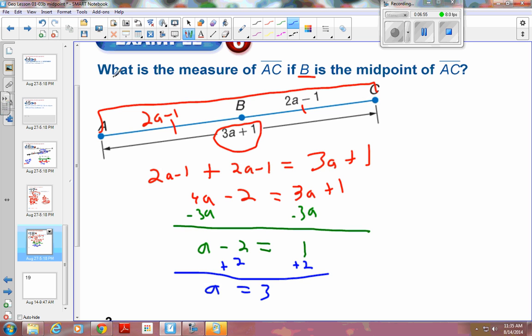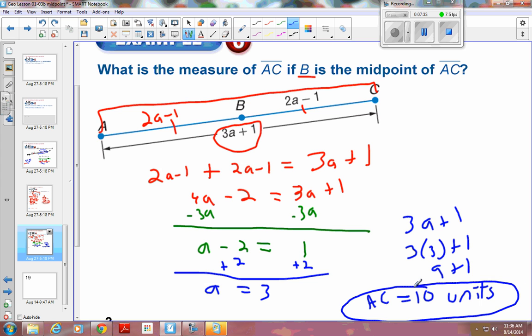Again, not the final answer. What is the measure of AC is what we're looking for. AC is the whole thing. The whole thing is a 3A plus 1, so that's going to be 3 times 3 plus 1, which is 9 plus 1. So your answer is 10 units, and that's going to be equal to AC. The measure of segment AC is 10 units. Final answer. Be very careful this entire year with making sure you answer the question that is being asked.